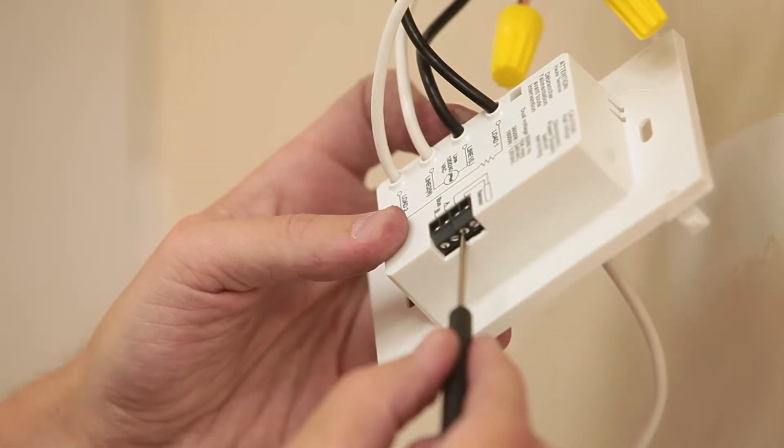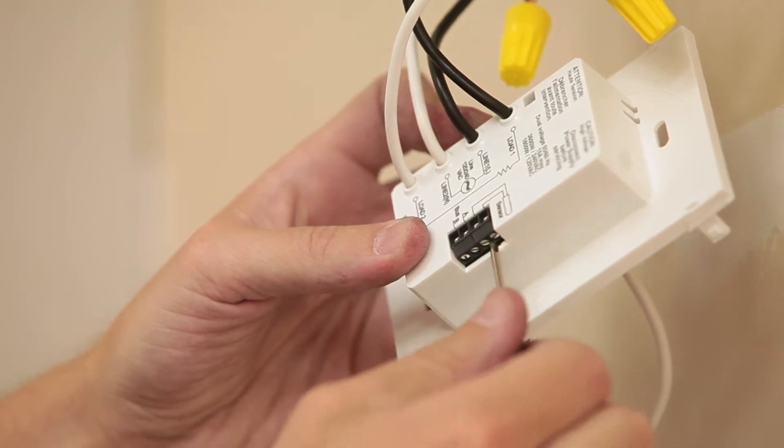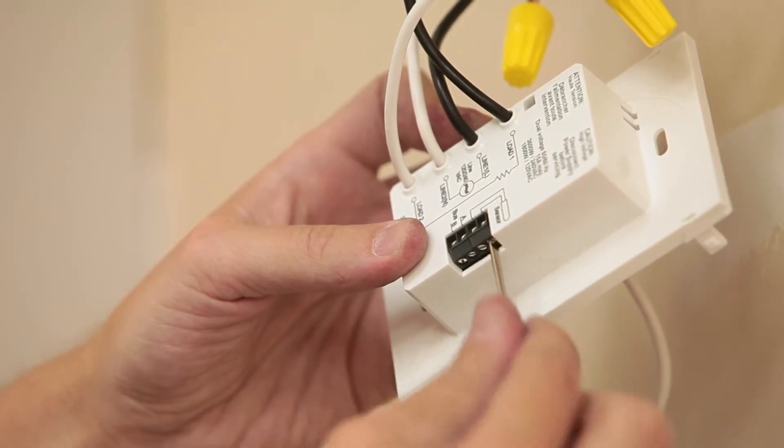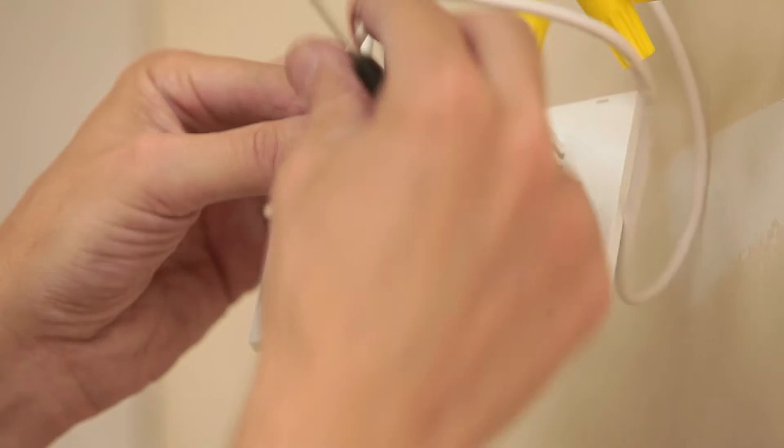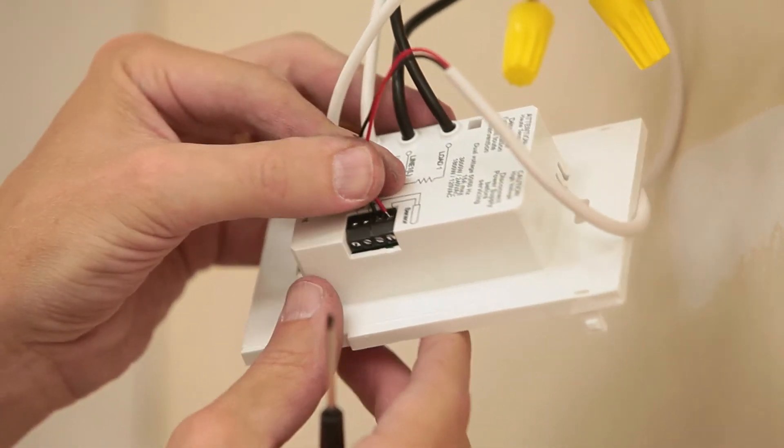The two wires from the sensor are not polarity sensitive. Connect these to the sensor wire terminals by first loosening the terminal screws, then inserting the wire ends into the terminals. Tighten the screws until the sensor wires are secure.